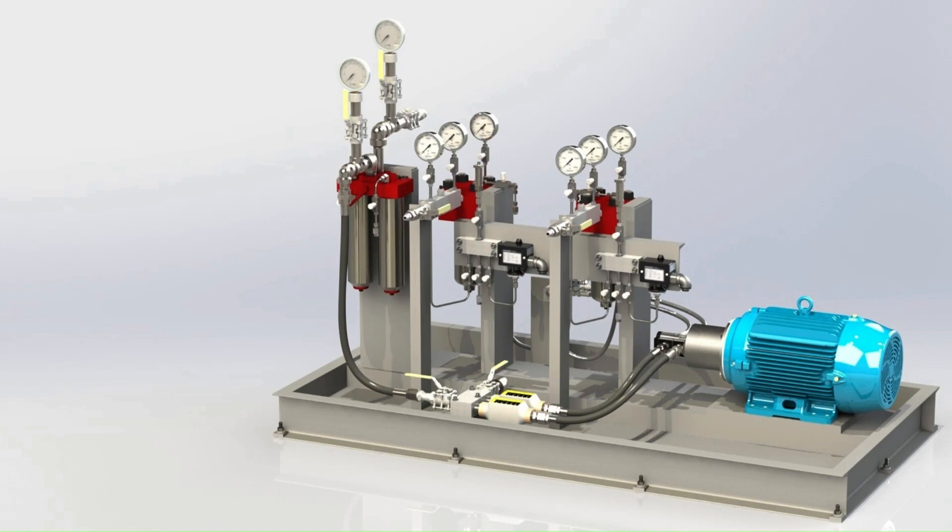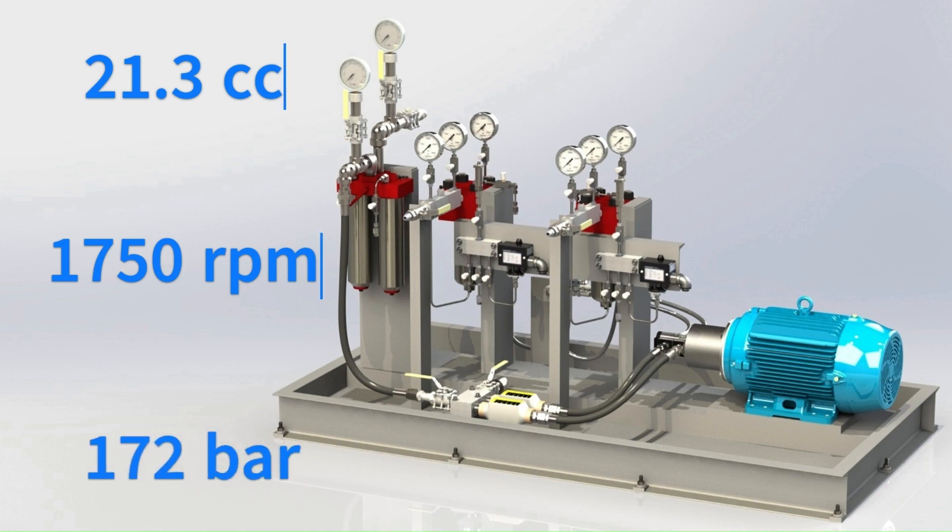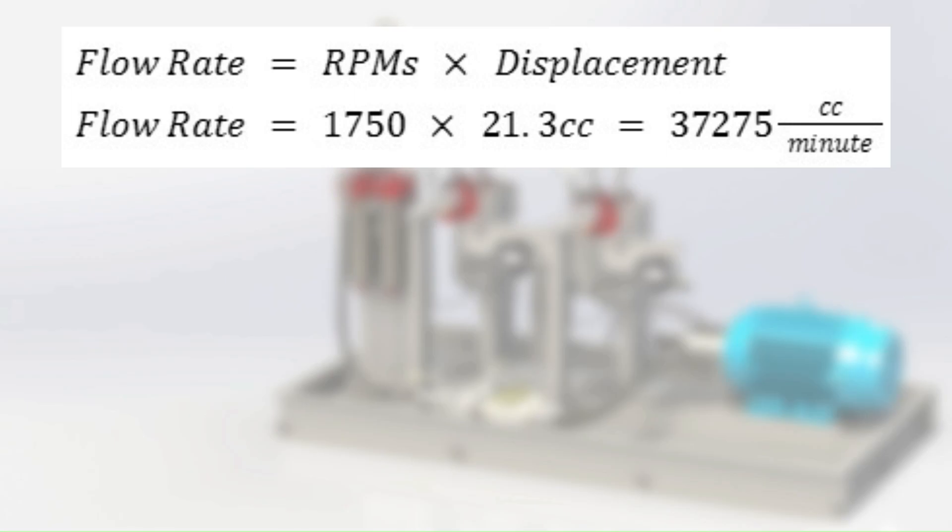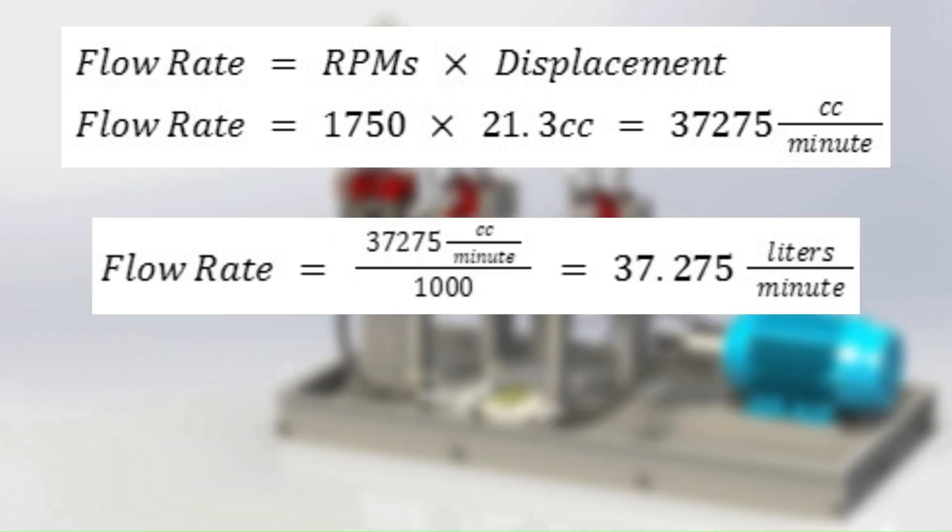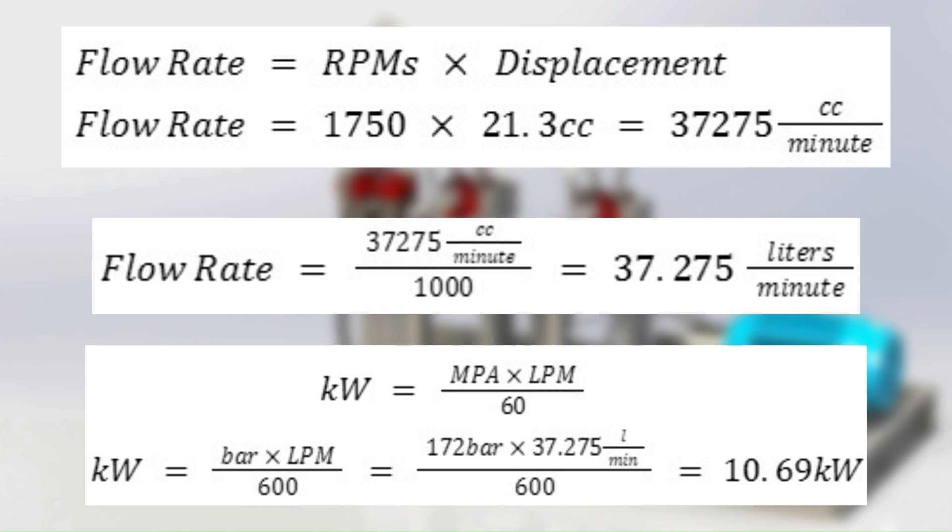If your pump displacement is measured in cubic centimeters, you can either convert it to cubic inches or stick to SI units. Doing this same example in SI units, we assume a pump displacement of 21.3 CC. Again, the motor RPMs will be 1750 and our system pressure will be 172 bar. We first find the volume per minute and then we convert to liters per minute. Running this through our kilowatt equation gives us 10.69 kilowatts.